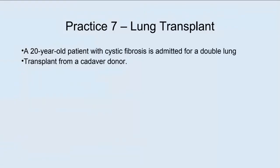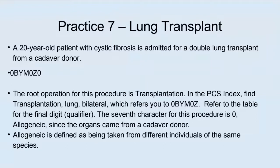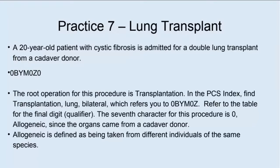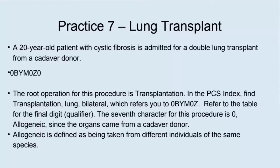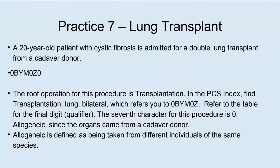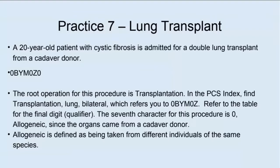Practice: A 20-year-old patient with cystic fibrosis is admitted for a double lung transplant from a cadaver donor. The procedure code is 0BYM0Z0. The root operation is transplantation. In the PCS index, find transplantation, lung, bilateral — which refers you to 0BYM0Z (only six digits). You need that seventh digit, so refer to the table for the final digit — the qualifier. The seventh character is 0 (allergenic) since the organs came from a cadaver — from another person.